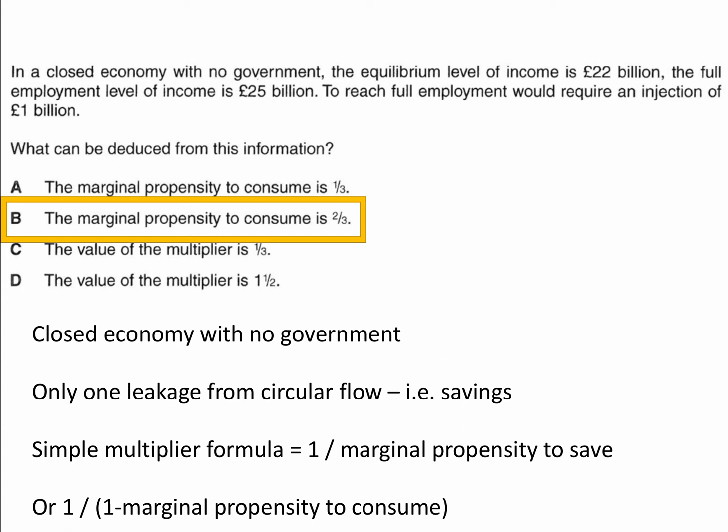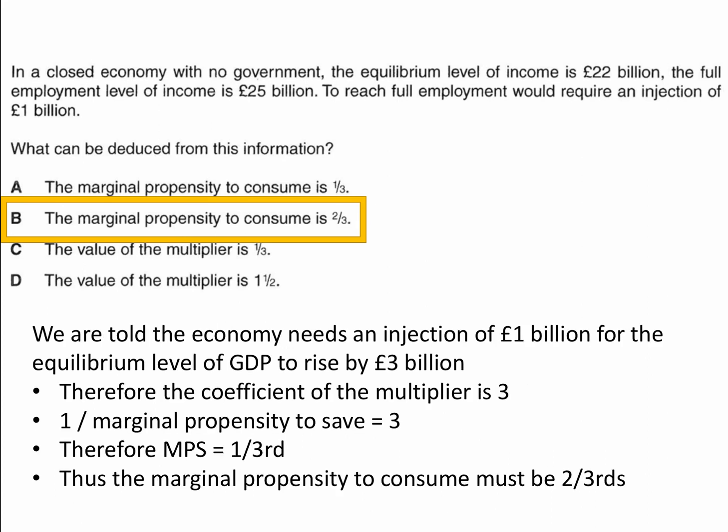Keep in mind that the marginal propensity to consume plus the propensity to save must equal one. We're told the economy needs an injection of 1 billion for the equilibrium level of GDP to rise by 3 billion. Therefore we can work out that the coefficient of the multiplier must be 3. We know the formula for the multiplier is 1 over the marginal propensity to save, so 1 over MPS must equal 3. Therefore the marginal propensity to save must be one-third.